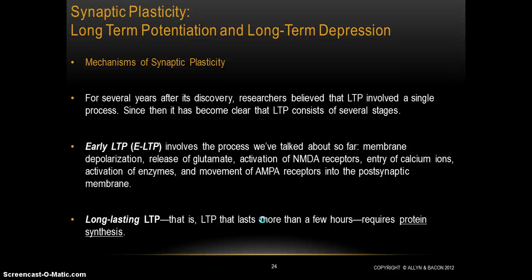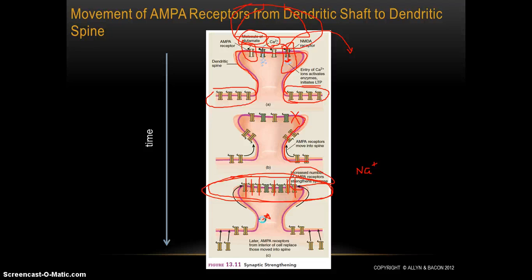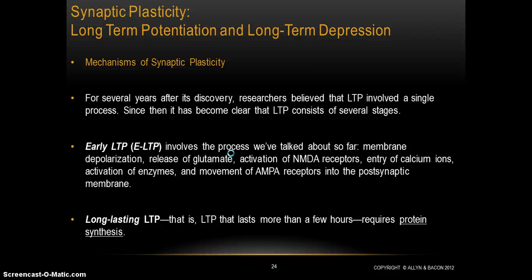We've talked about really all of the steps involving long-term potentiation. One thing we haven't talked about yet is, at a molecular level, what is actually causing this movement of AMPA receptors from the dendritic shaft to the synapse. That's what we're going to talk about here. And foreshadowing what's to come — we've mentioned this before — what's going to be crucial in this process is the protein PKM zeta, which will be crucially important for long-term potentiation, the last piece of the puzzle we haven't talked about yet.